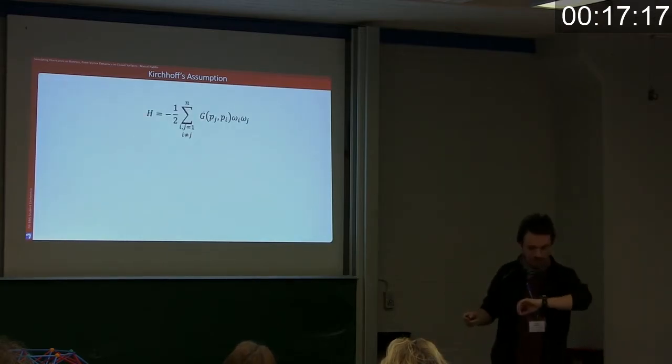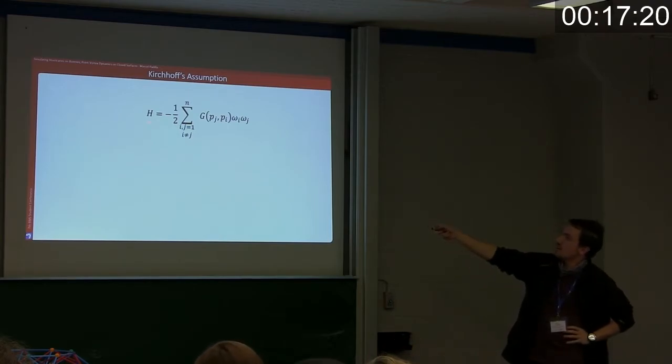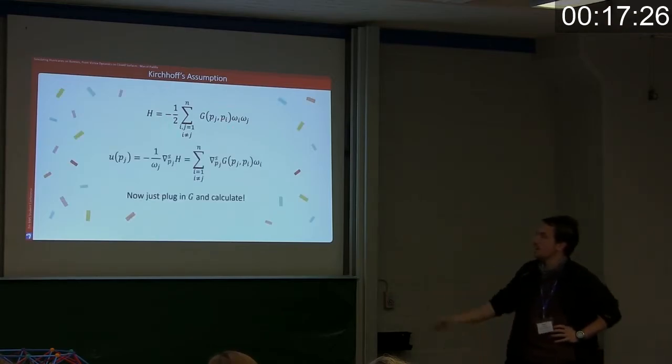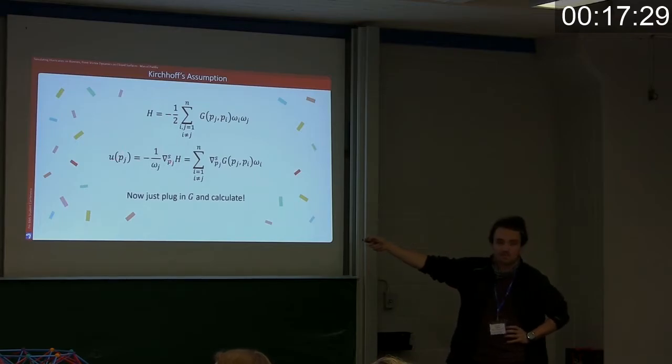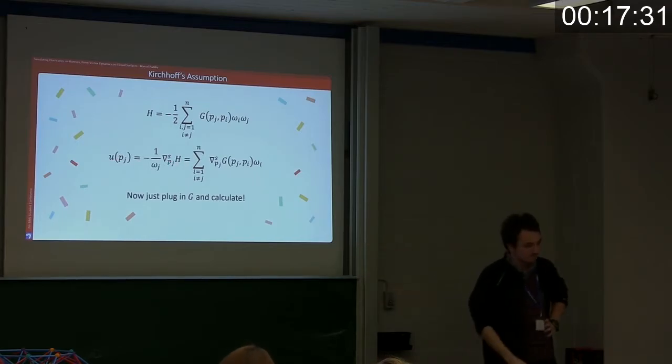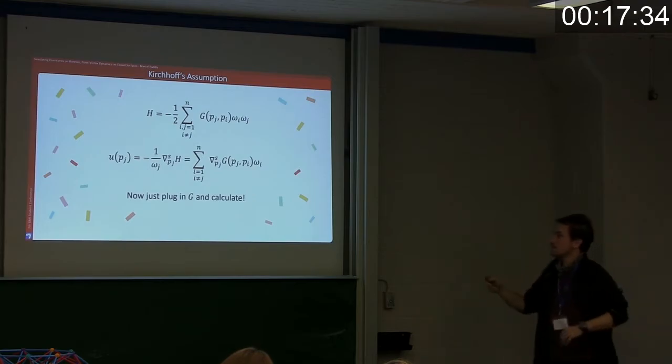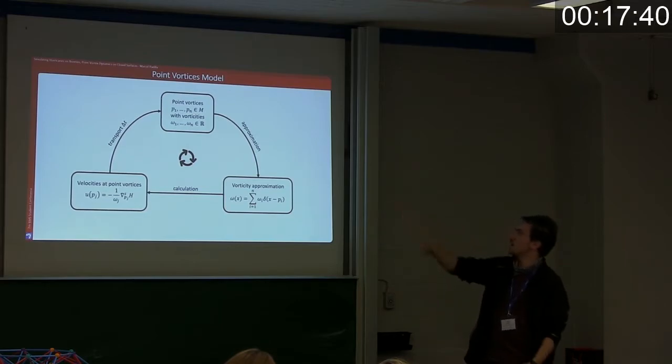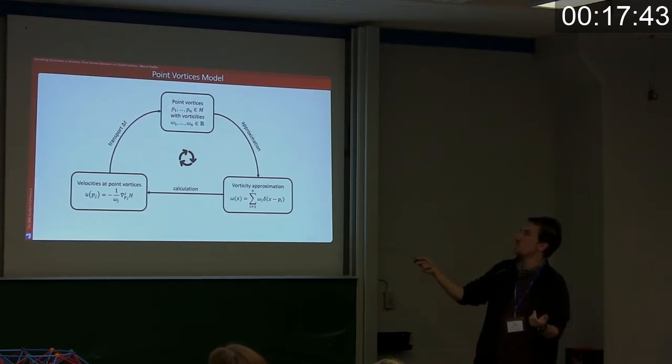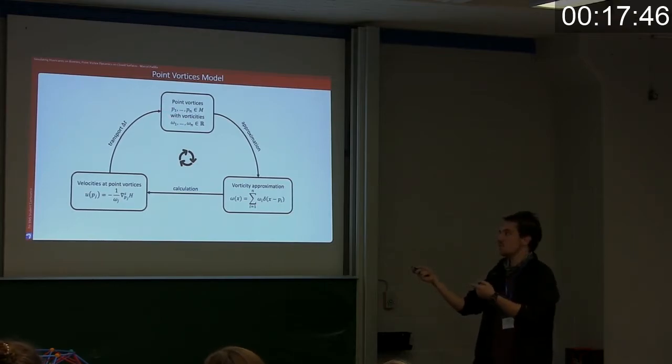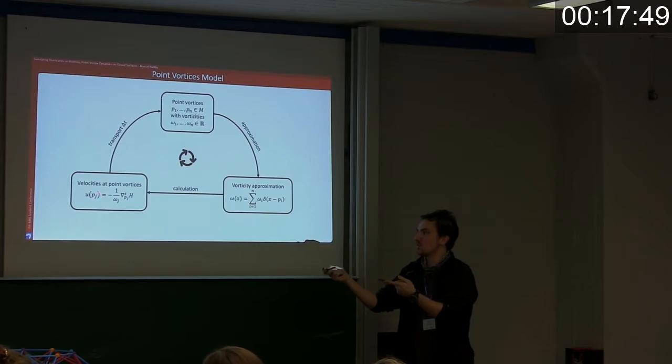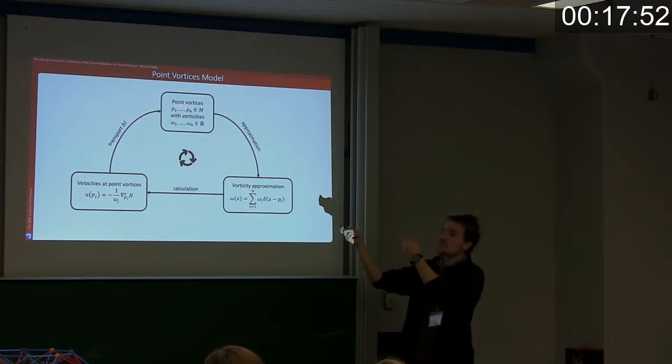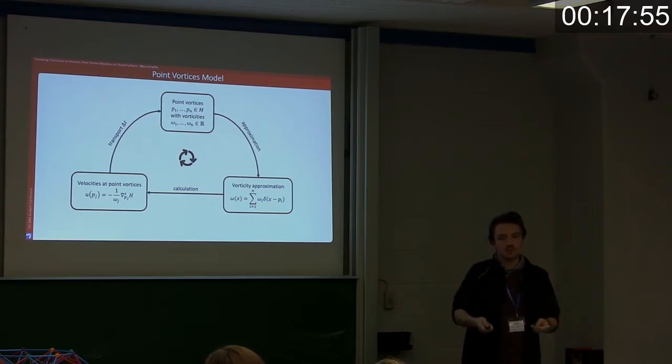By the way, I have to skip ahead here a bit. The kinetic energy of the fluid can be computed, it can be written also in terms of functions like this. And then we can compute the velocity field at every point as the symplectic gradient of this Hamiltonian, this kinetic energy. And we are done, only that the Green's function will still stop us in the moment. So the idea is that we take point vortices, we approximate the vorticity field, we use the vorticity field to compute the velocities on the point vortices, and then we advect the points to new positions according to these velocities, and then we do this again. And this is our fluid simulation.